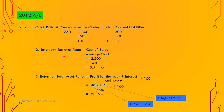Number two: inventory turnover ratio equals cost of sales over average stock. In this question, they have given cost of sales as 2,200. Average stock — we have to calculate opening stock plus closing stock divided by 2. Under current assets, inventory is 300 (closing stock), and opening stock is 500. So 500 plus 300 equals 800, divided by 2, gives average stock of 400. Simplified, you get 5.5 times.